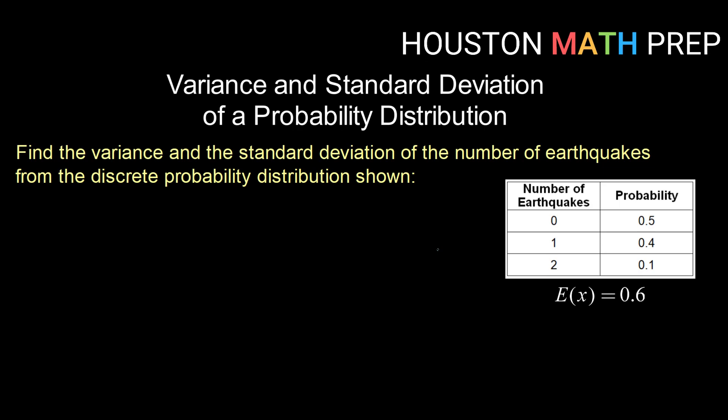So here's our earthquake example from before. We calculated the mean to be 0.6 in our expected value video, so I've just copied that information here. Now we want to calculate the variance and the standard deviation for the number of earthquakes from this distribution.